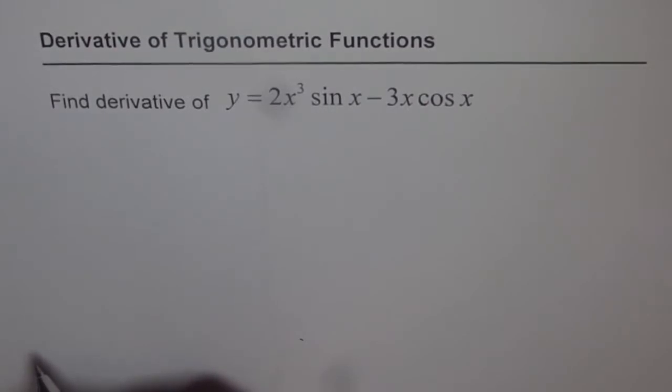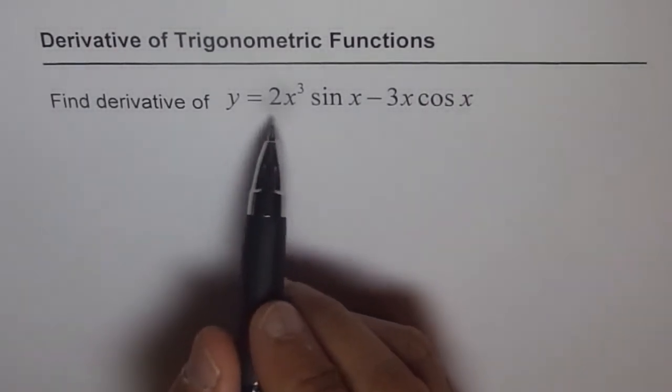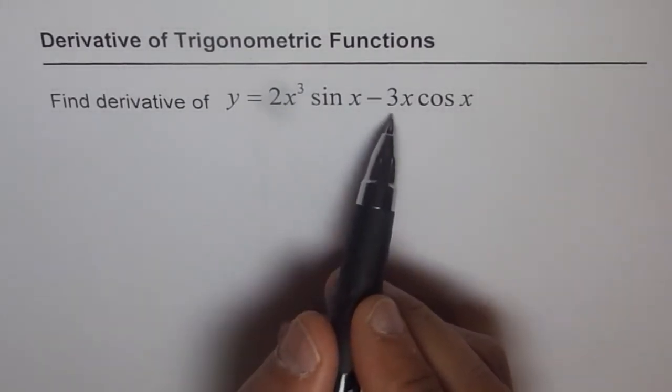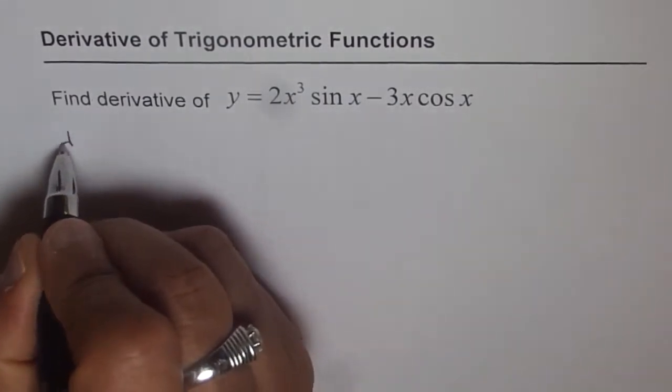We will apply the derivative rules to find the derivative of the given function. We are given y equals 2x cubed sin x minus 3x cos x. Then what is dy dx?